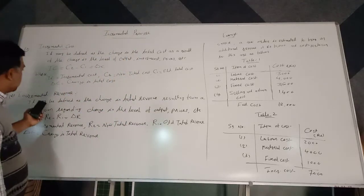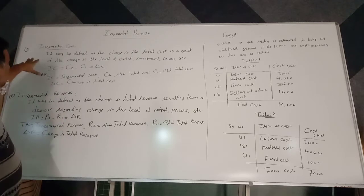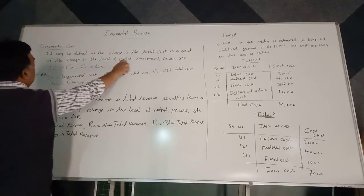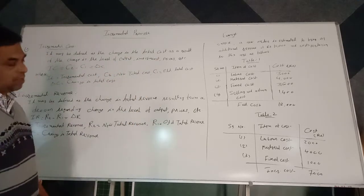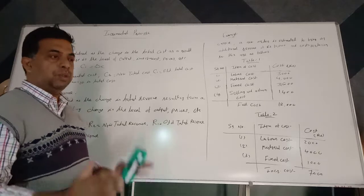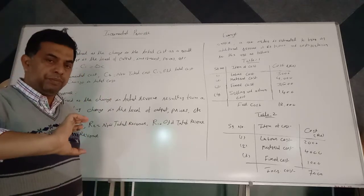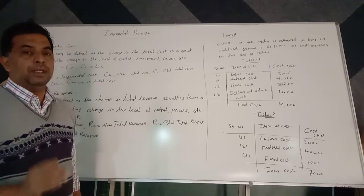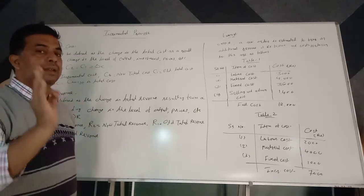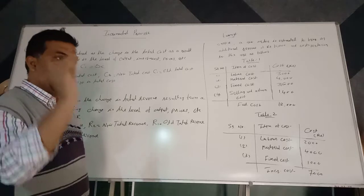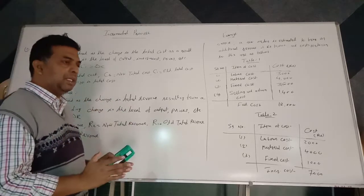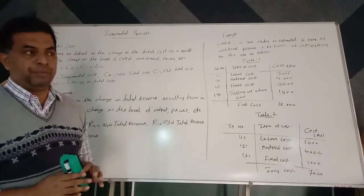To understand the concept clearly, we have to discuss two concepts associated with the incremental principle. First is incremental cost and second is incremental revenue. Incremental cost may be defined as change in total cost as a result of change in the level of output, investment, or prices. This is similar to marginal cost.